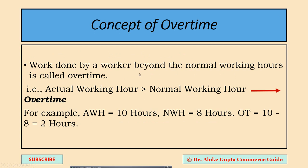What is the concept of overtime? Work done by a worker beyond the normal working hours is called overtime. That means if your normal working hour is 8 hours and you have worked for 10 hours in the factory, then the extra hours over the normal working hours — that is 10 minus 8, which is 2 hours — will be called overtime.